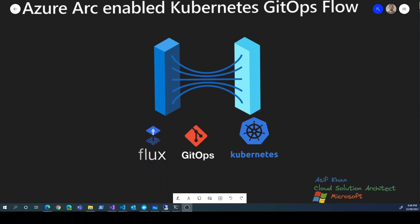But in today's session, we will take the next step from there — once the Azure Arc infrastructure is enabled on your Kubernetes cluster, how can you enable GitOps?